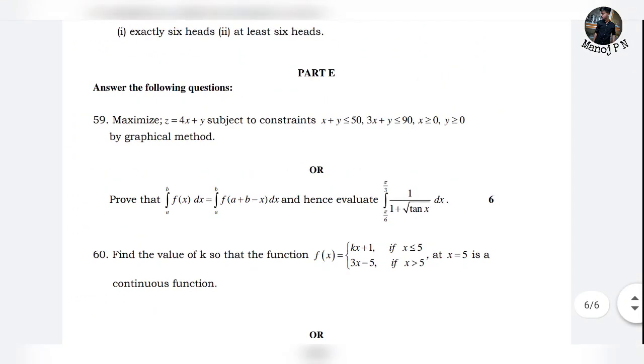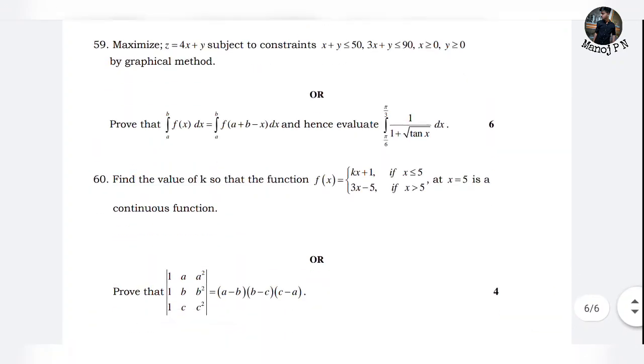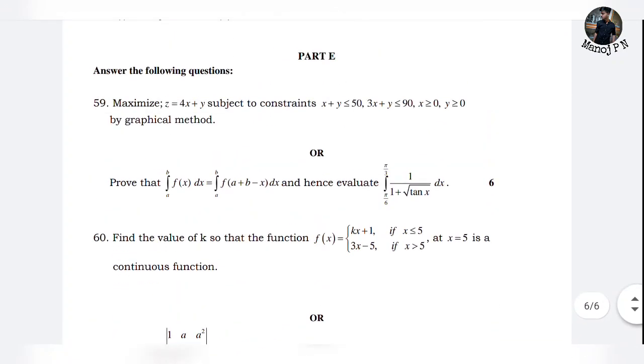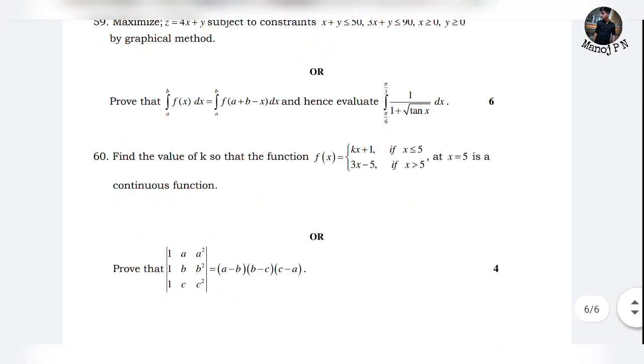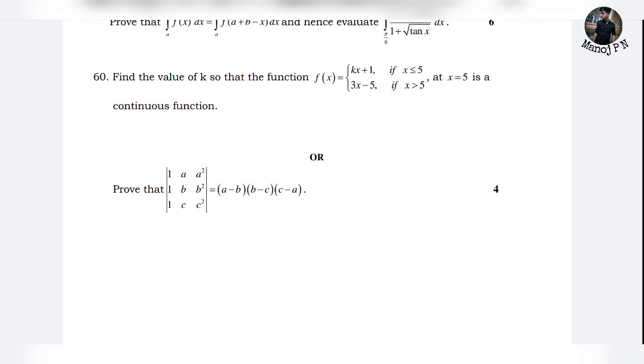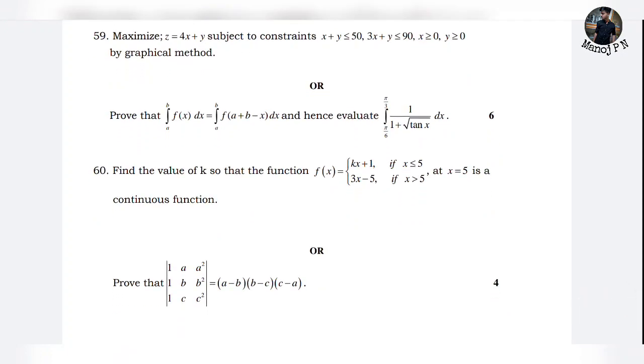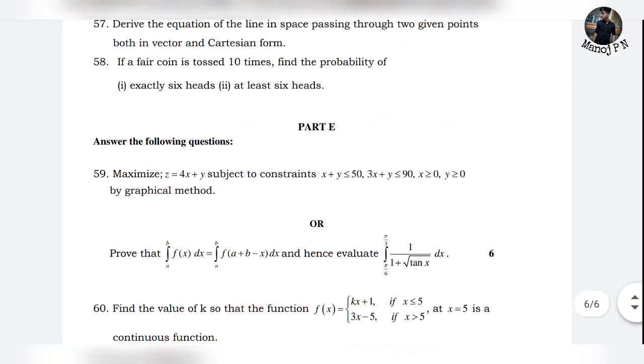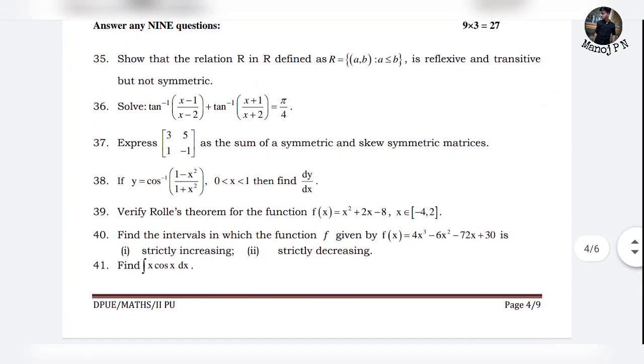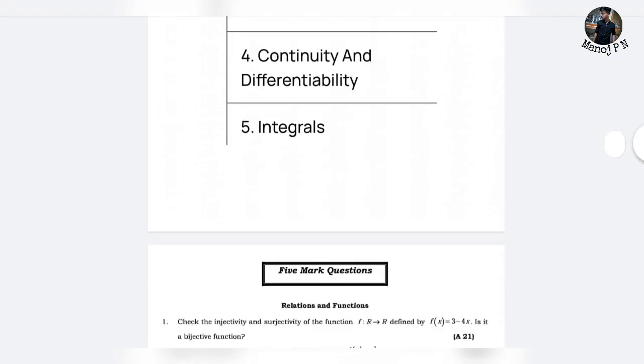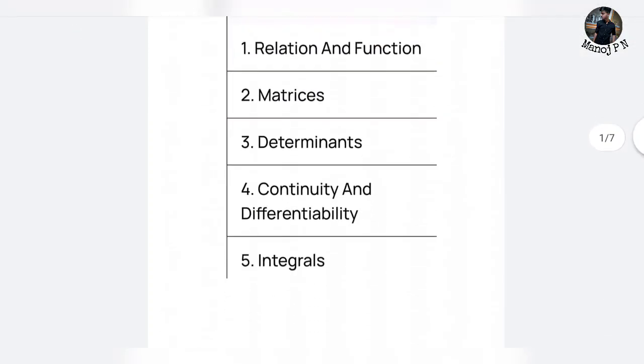This is Part E. You have a graph sheet. There are certain 12 questions, standard 12 questions. You can prove it in the determinants. You have 4 questions. There are actually 2 questions, and you can use LPP, and you can use determinants. Simple, easy. This is the relation function, matrix, determinants, differentiability, and integral.